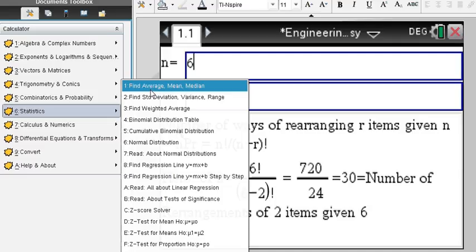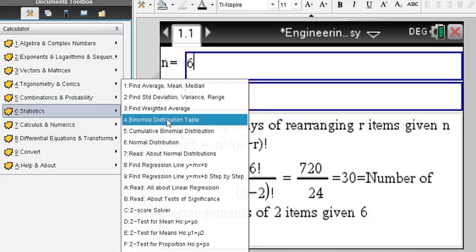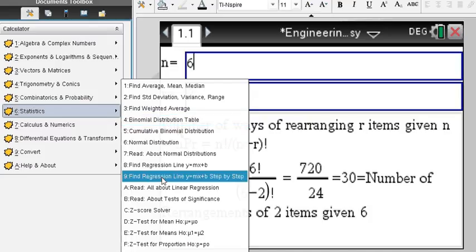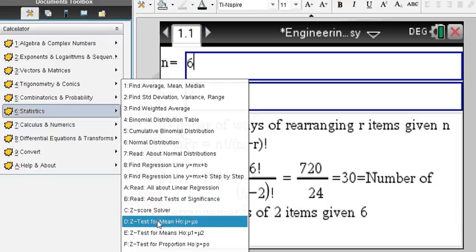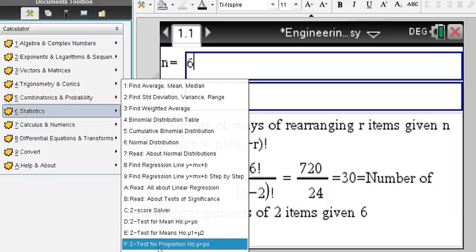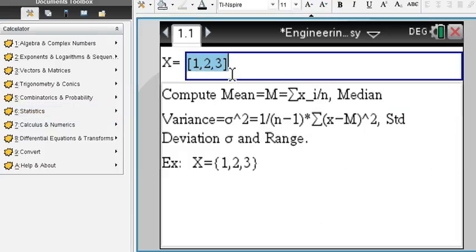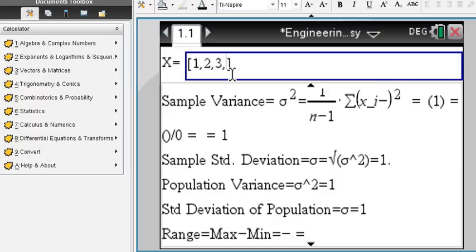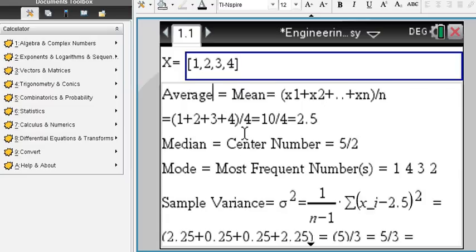Statistics. Important topic. Averages, means, medians. Find standard deviation, binomial distribution, normal distribution, regression, z-score solver, z-tests. We have tests here as well, and confidence intervals. Okay, so let's do next. Find average. You just enter a list of numbers, and here is the computation of the mean.